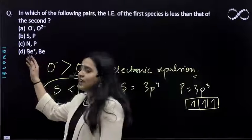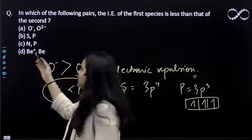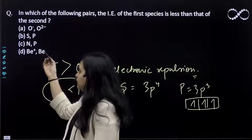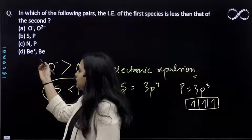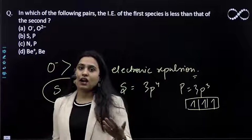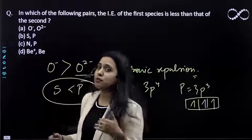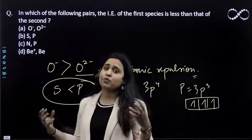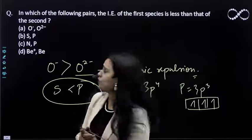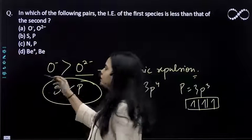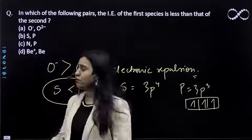Nitrogen being smaller will have more ionization energy in comparison to P. And Be⁺ will again have more ionization energy because it has a positive charge on it, meaning more attraction. Therefore, the ionization energy of Be⁺ will be more.